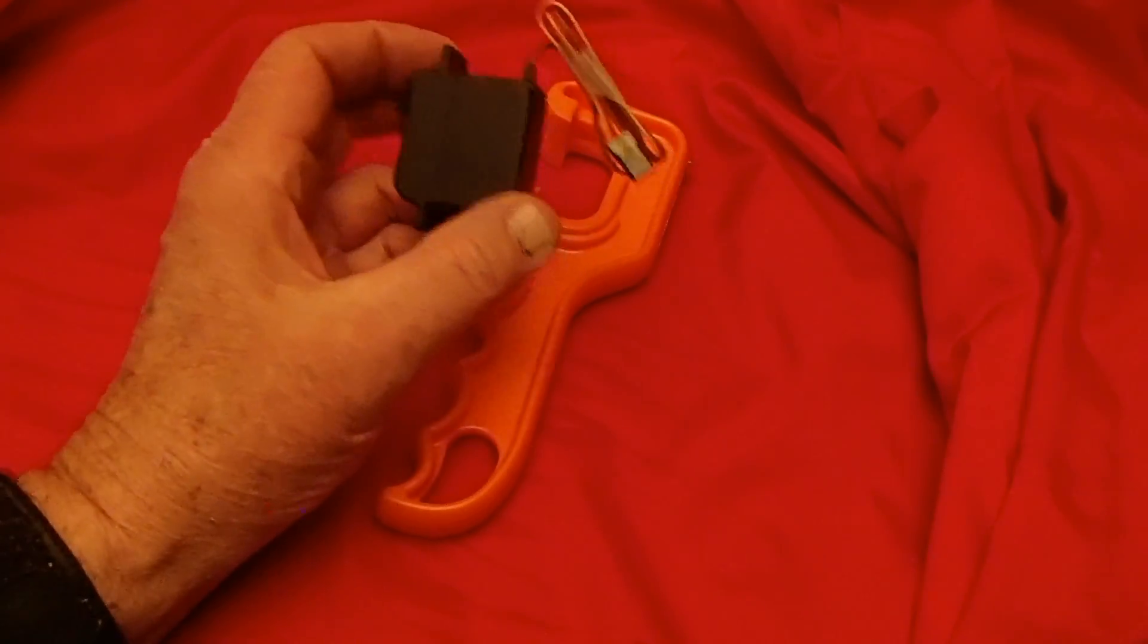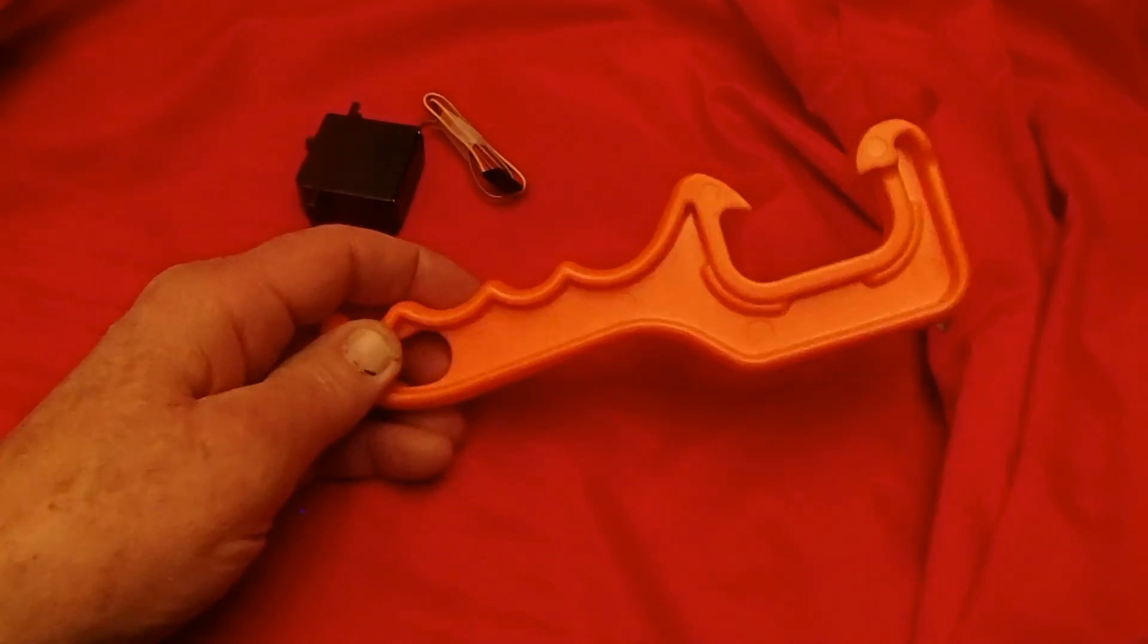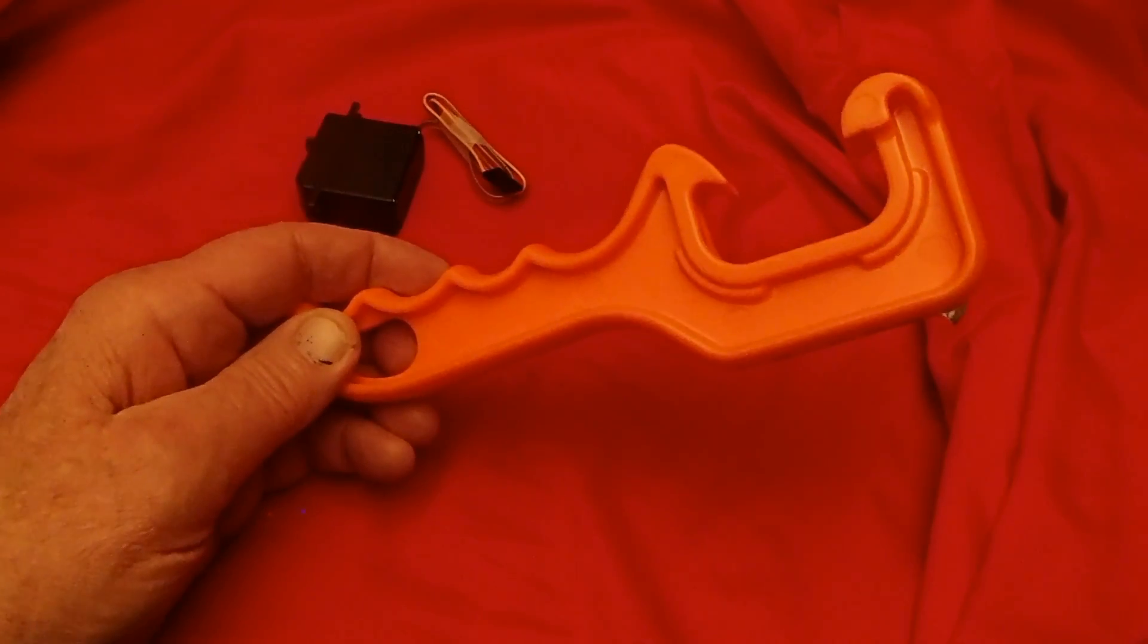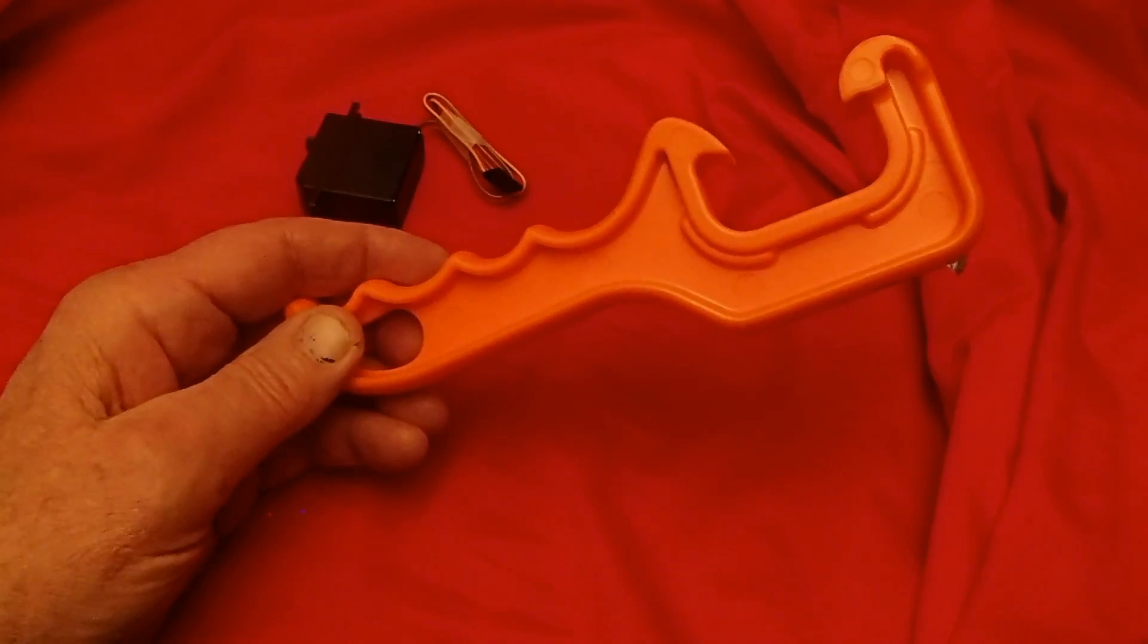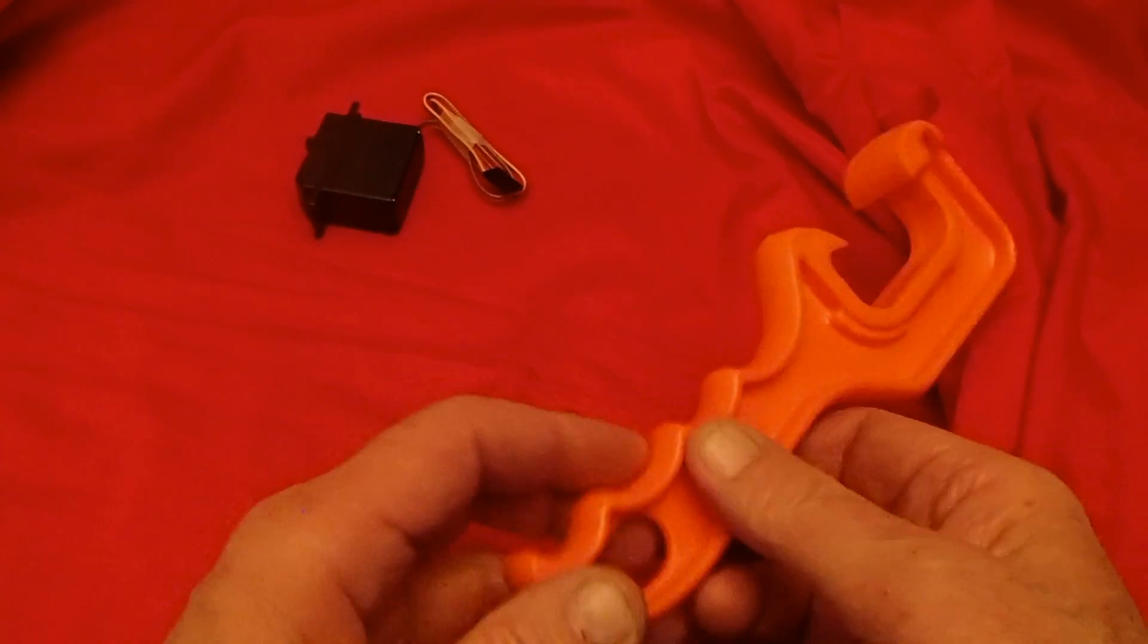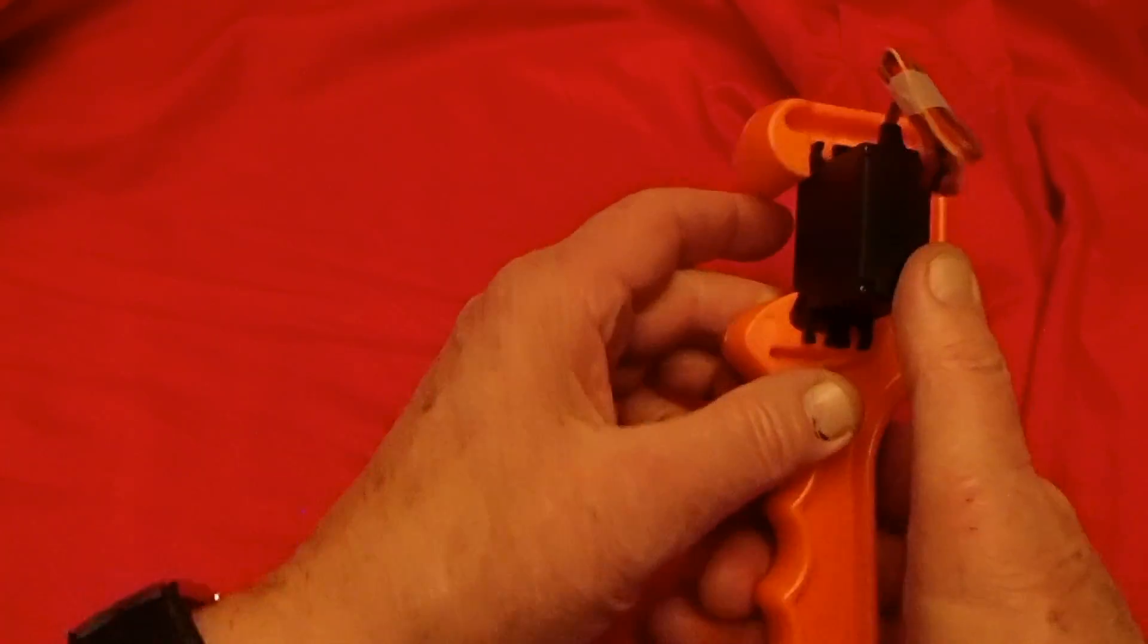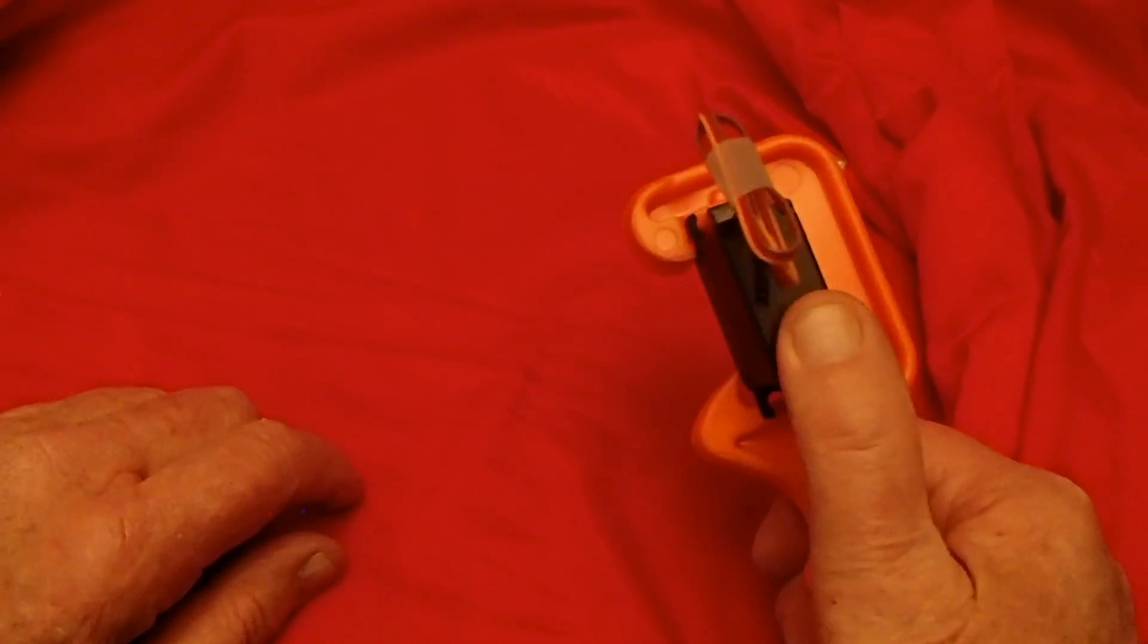While I was at the hardware store looking for ideas, I came across this gadget in a random bin. It was like $1.50, and it's a plastic device used to pop the lid on paint buckets. It just so happened that the servo I had picked out perfectly fits in the head of the paint bucket lid popper.